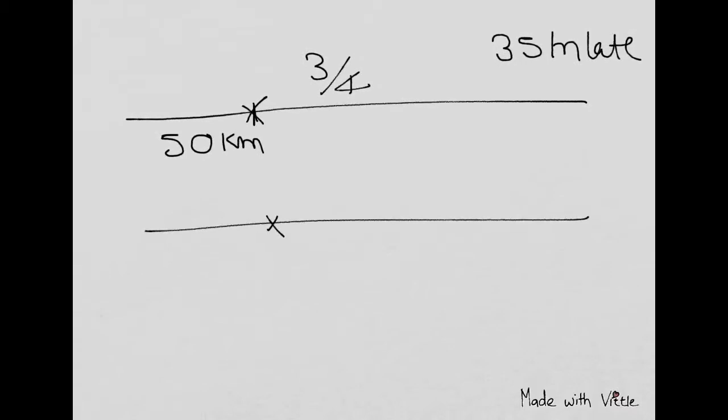If this same accident happened 30 kilometers further, after this will be the same - it will travel at three-fourths its regular speed and it reaches 23 minutes late. So earlier it was 35 minutes late, now it's reaching 23 minutes late.